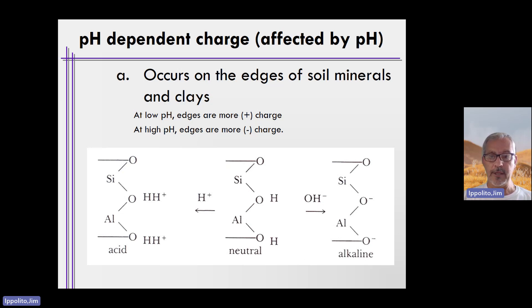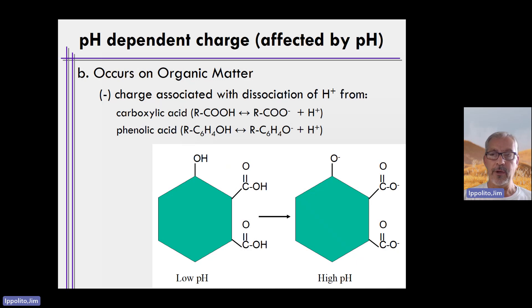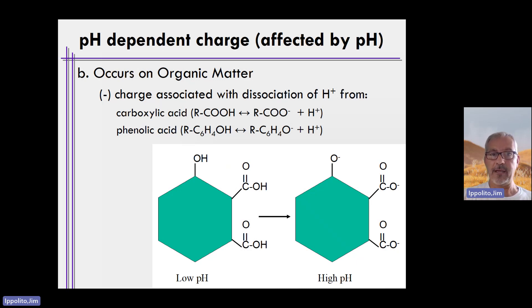pH-dependent charge is dependent on pH and can occur on the broken edges of clays or minerals. Another means by which pH-dependent charge arises is on the edges of organic matter or organic materials. The same process occurs on the edges of organic materials and organic matter — this negative charge is associated with the dissociation of hydrogens from functional groups sticking off the edges of organic compounds.